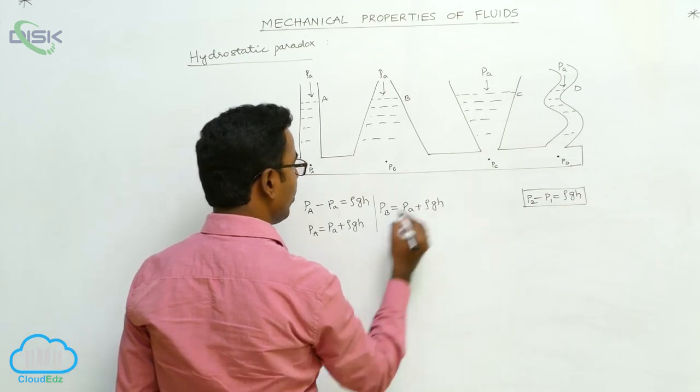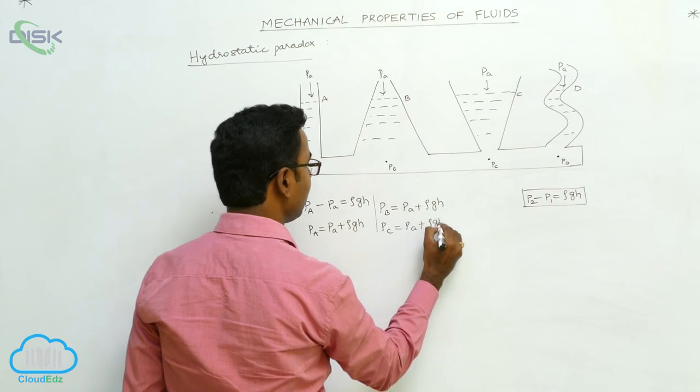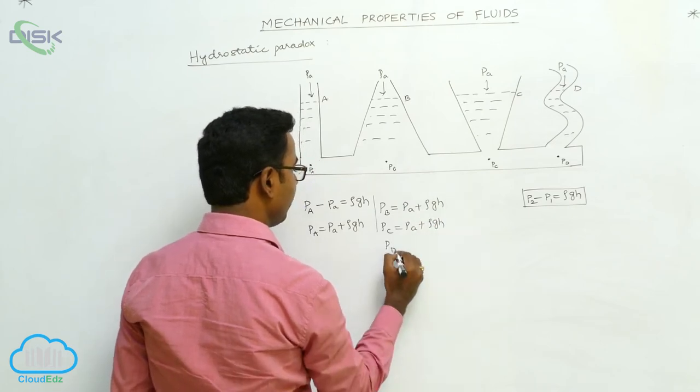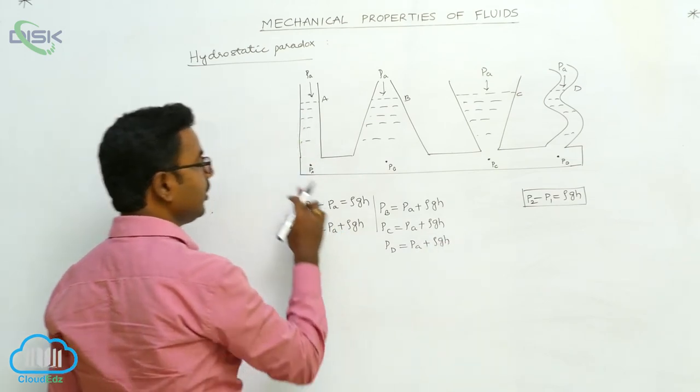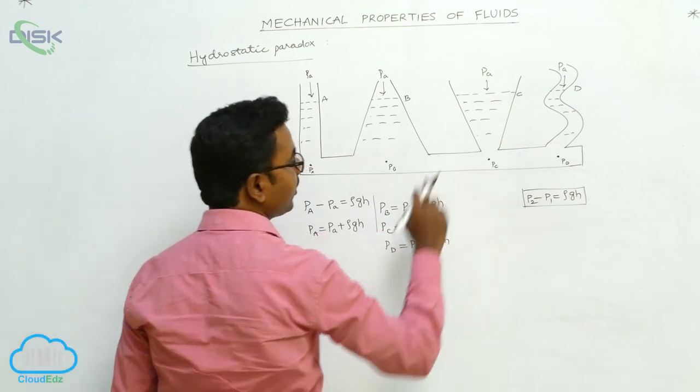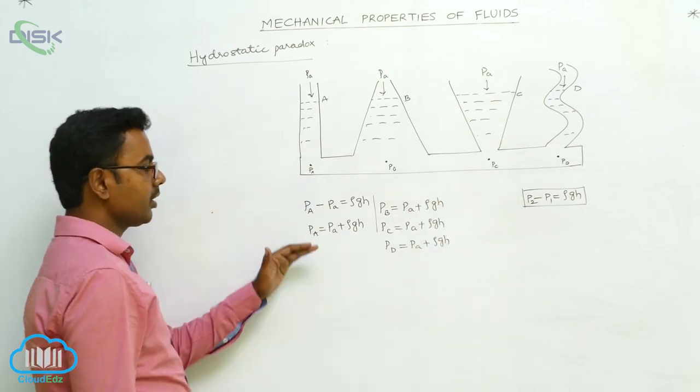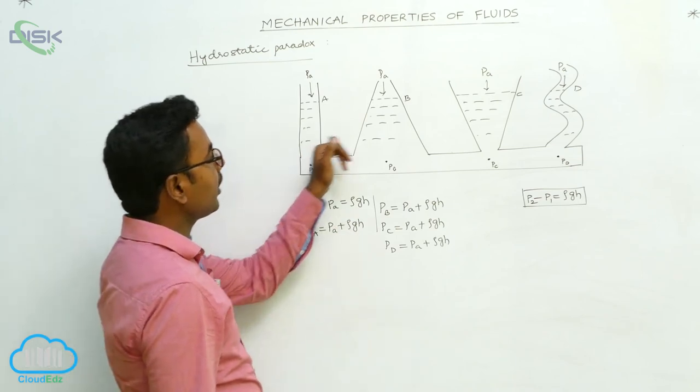At point C, pressure PC equals PA plus ρgh, and at point D also, PD equals PA plus ρgh. All points are at the same horizontal level, so at all points pressure is same, that is given by PA plus ρgh. So the liquid rises to the same height in all containers.